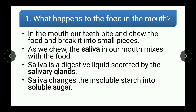So when food enters our mouth, our teeth bite and chew the food and break it into small pieces. The saliva, which is secreted by salivary glands, mixes with the food and changes the insoluble starch into soluble sugar. That's the answer to the first question: what happens to the food in the mouth?